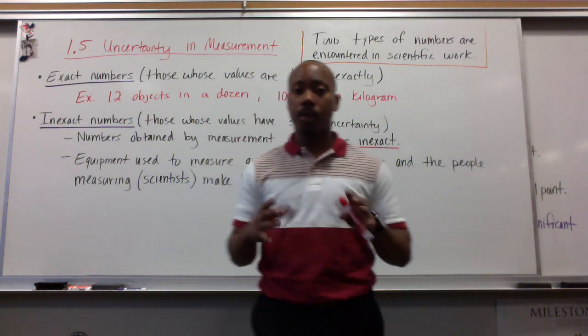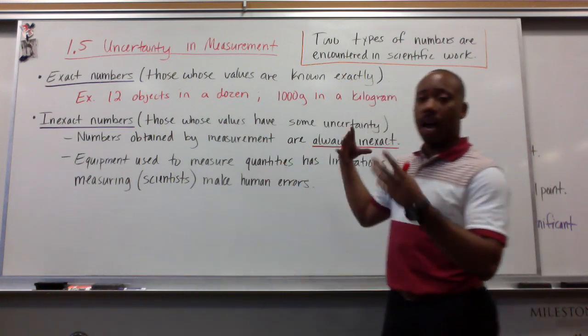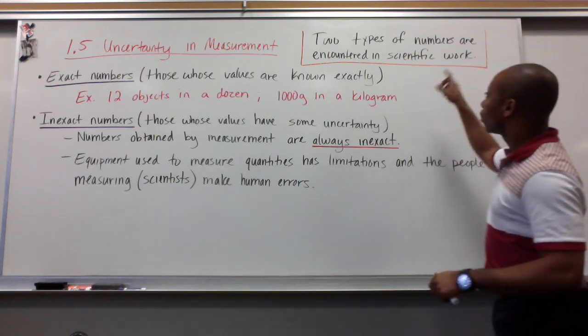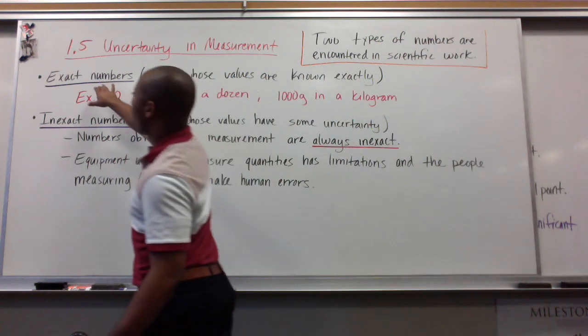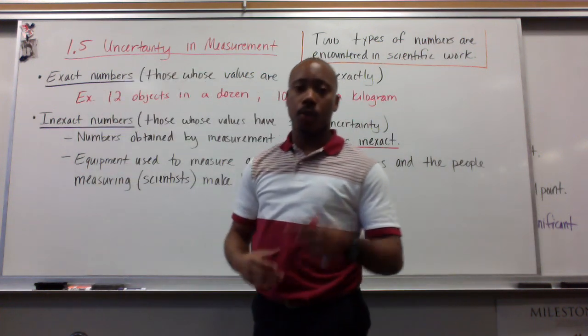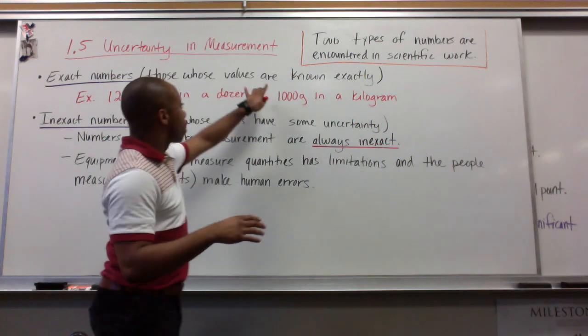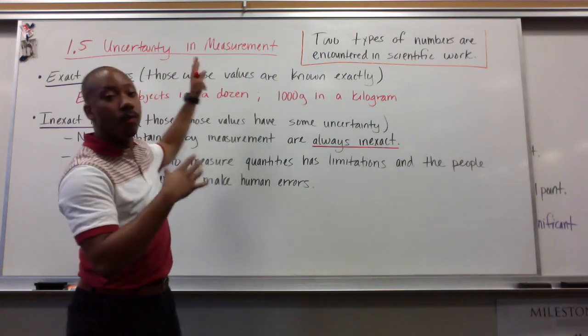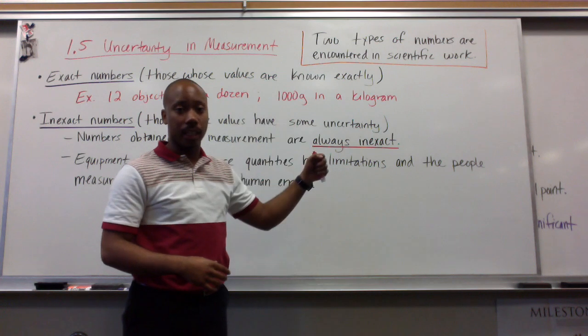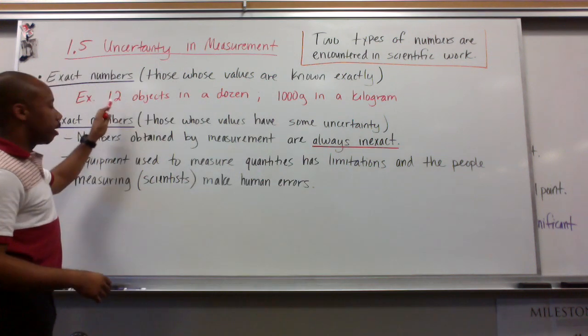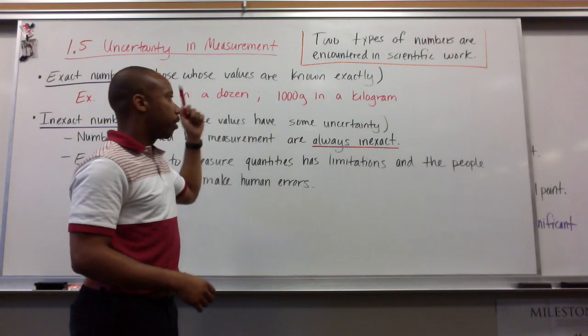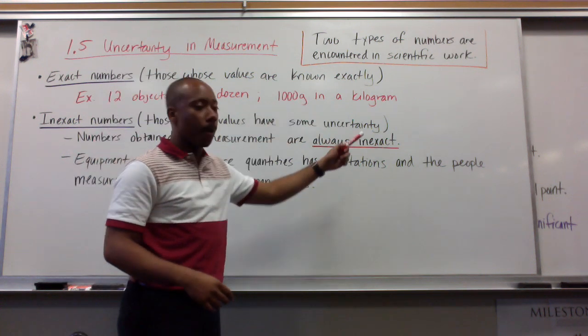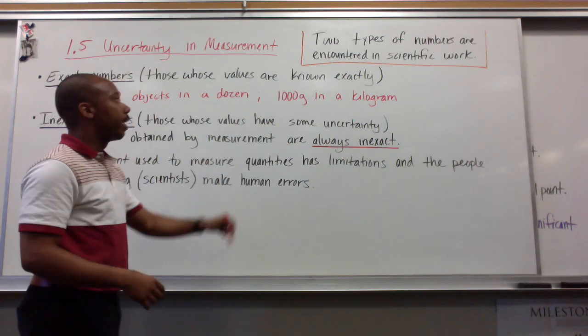And when we're dealing with numbers, section 1.5 is going to highlight that there are two types of numbers encountered in scientific work. One type are exact numbers. Exact numbers are those whose values are known exactly. For example, we know that there are 12 objects in a dozen. We know that there are 1,000 grams in a kilogram. That is definite, known, and exact.